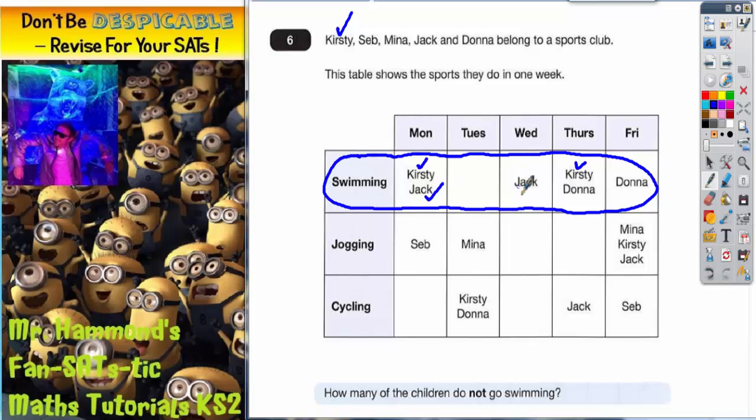Jack appears there and there. So Jack goes swimming on a Monday and Wednesday. So he definitely goes swimming. So tick him. Donna definitely goes swimming on a Thursday and a Friday. So tick her.